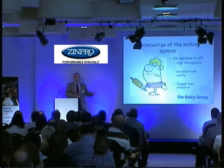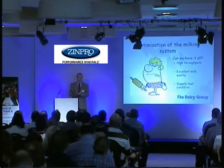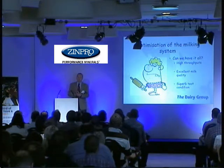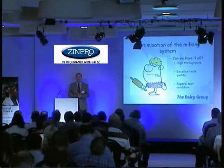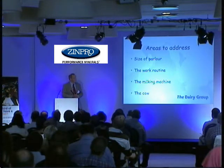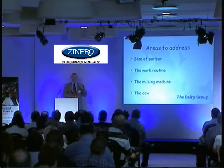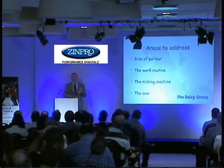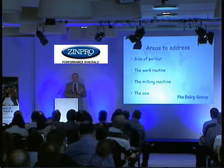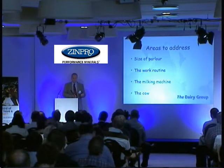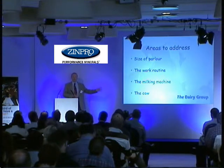Are we trying to achieve all of these things — high throughputs, fantastic milk quality, superb teat condition? The question is, can we achieve all three? We should think about the size of the installation, but we can't consider that without considering the work routine employed within that milking. We also need to look at what we can do fundamentally to the milking equipment to make it more efficient, and we mustn't forget the key player: the dairy cow.